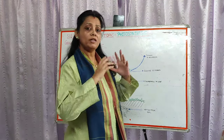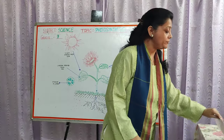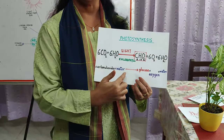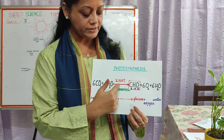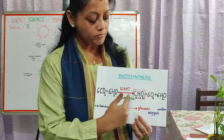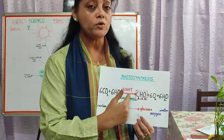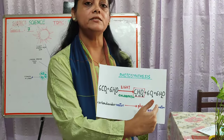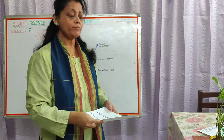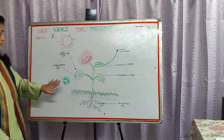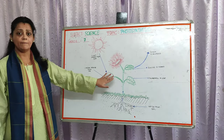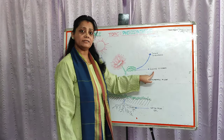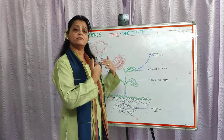Now we will see how all these raw materials combine to form food in the leaves of the plants. Carbon dioxide and water combine in the leaves of the plant, in the presence of sunlight and chlorophyll, to form glucose — also known as sugar. This glucose is the food of the plant. As a by-product, oxygen and water are also formed and released back into the air. So to recap: carbon dioxide and water combine in the presence of sunlight and chlorophyll in the leaves to produce glucose, and the by-products oxygen and water are released back into the air.